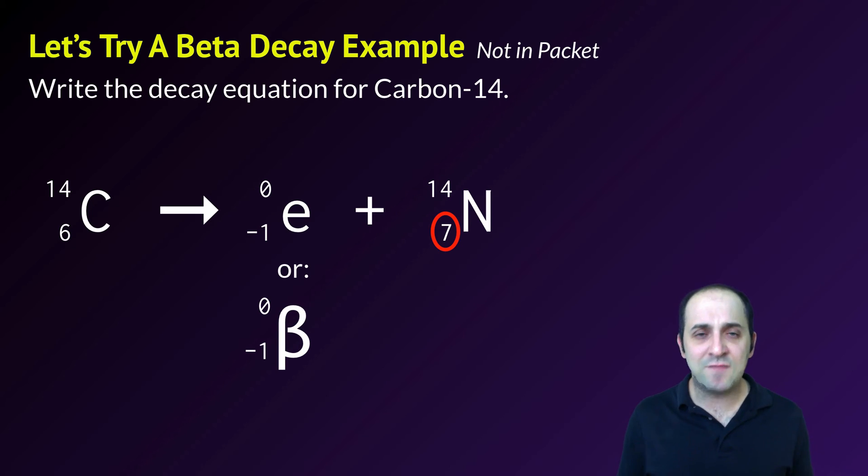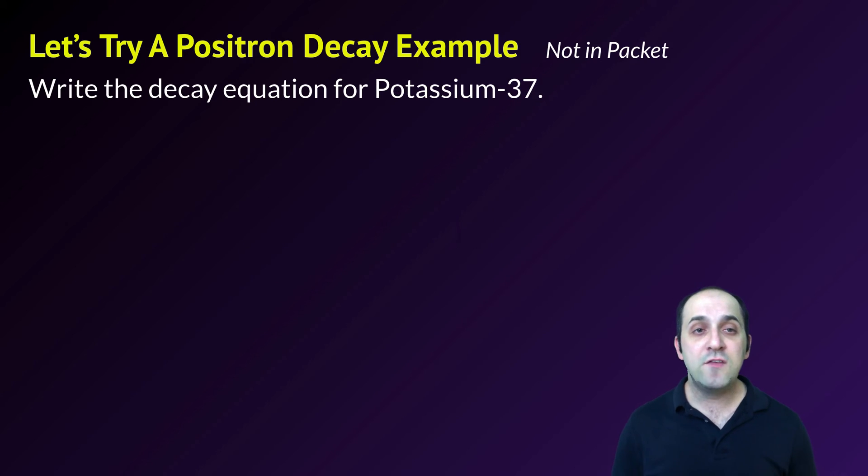Does this example make sense? If it doesn't, write down any questions and let's look at a positron example. Let's do a positron decay example for potassium-37. Pause the video, try it on your own. Potassium-37, the symbol is K, the mass is 37, and the atomic number is 19. You can get the atomic number off the periodic table if you forget.